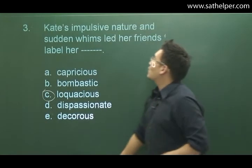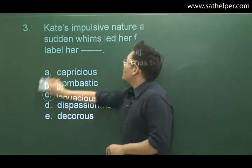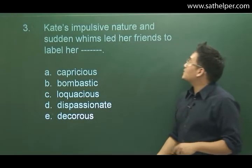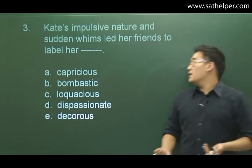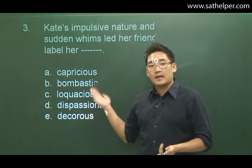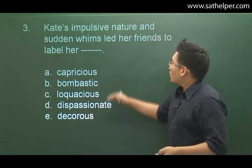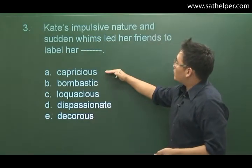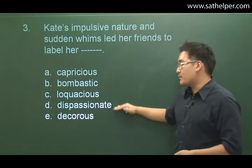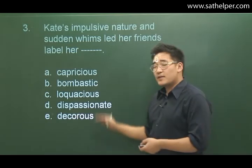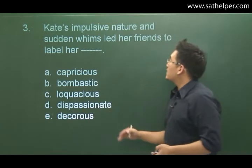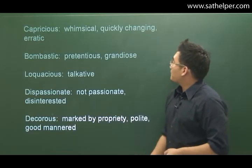Moving on to question number three. Kate's impulsive nature and sudden whims led her friends to label her as blank. The answer choices are: capricious, bombastic, loquacious, dispassionate, and decorous. All of these are very good SAT words, so you should try to memorize all of them.